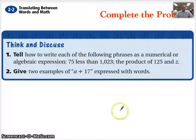Next, we have to complete the problem. Here, it says, tell how to write each of the following phrases as a numerical or algebraic expression: 75 less than 1,023. You may have to refer back in the video to what does it mean, less than? What operational sign do I use? And when it says you need to translate the product of 125 and Z, you might have to go ahead and refer back to that table that I showed you. Again, you do not need to copy it. I'll provide a copy of it for you in class. And then, the second question is, give two examples of what this is expressed with words. Alright, see you in class.